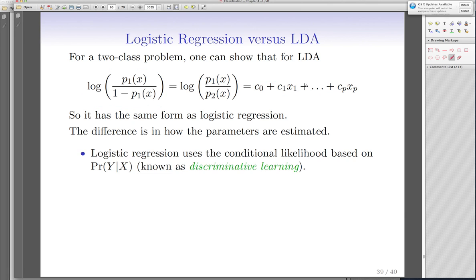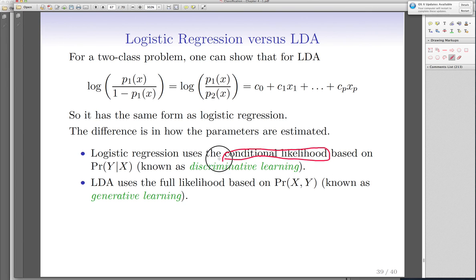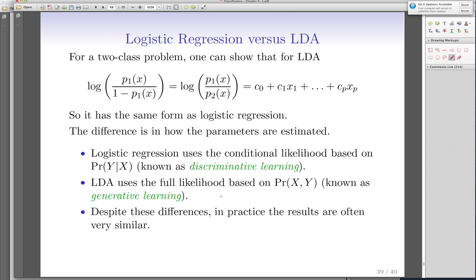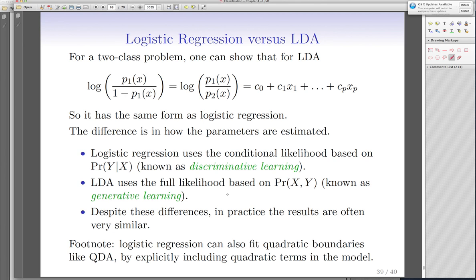So, they have the same format in a sense. And the only difference is logistic regressions use conditional likelihood functions. Whereas, LDAs use generative linear functions. So, instead of using y condition on x, you use the probability of x and y simultaneously. So, generalized linear, generative learning functions. So, despite the differences, in practice, if you just use them in practice, they almost do the same thing unless you're dealing with some very explicit, very exceptional cases. And if you use QDA, you can show that QDAs and logistic regression that use quadratic terms are also very similar in most of the applications.